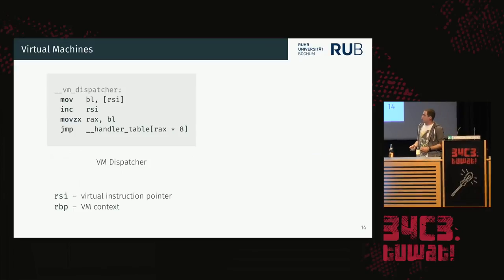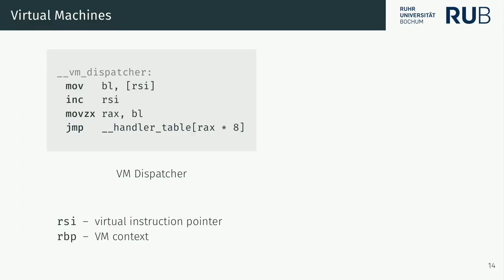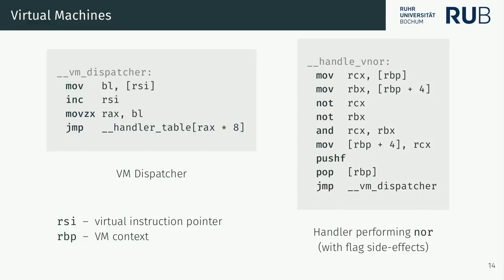Looking closer: RSI holds the virtual instruction pointer and RBP holds the VM context. The VM dispatcher takes one byte of memory, increments the instruction pointer, looks up the corresponding handler, and jumps to it. The no-op handler reads from the virtual context, performs some semantics, writes values back, and jumps back to the dispatcher to execute the next virtual instruction.